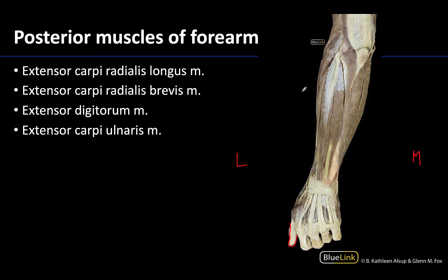There are actually — whereas there is only one flexor carpi radialis — two extensor carpi radialis. There will be a longus, which is this one right here. The extensor carpi radialis longus is going to be partially overlapped by the brachioradialis, which we saw a little bit clearer on the more anterior view. The proximal attachment for the extensor carpi radialis longus is actually going to be just superior to the lateral epicondyle.